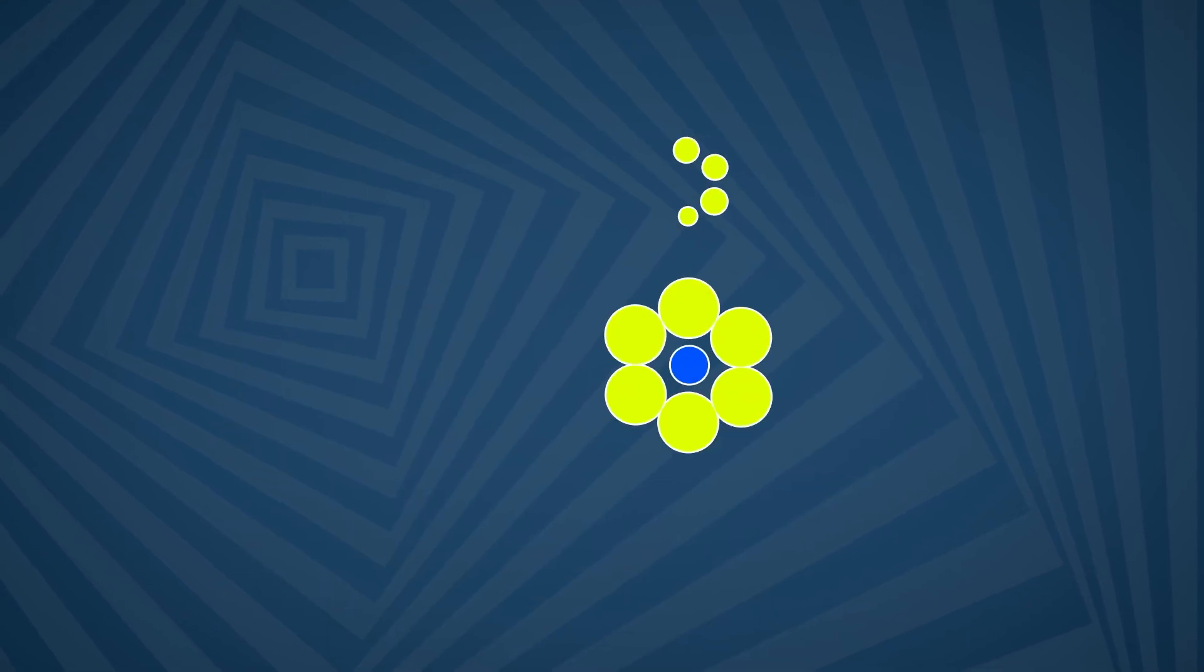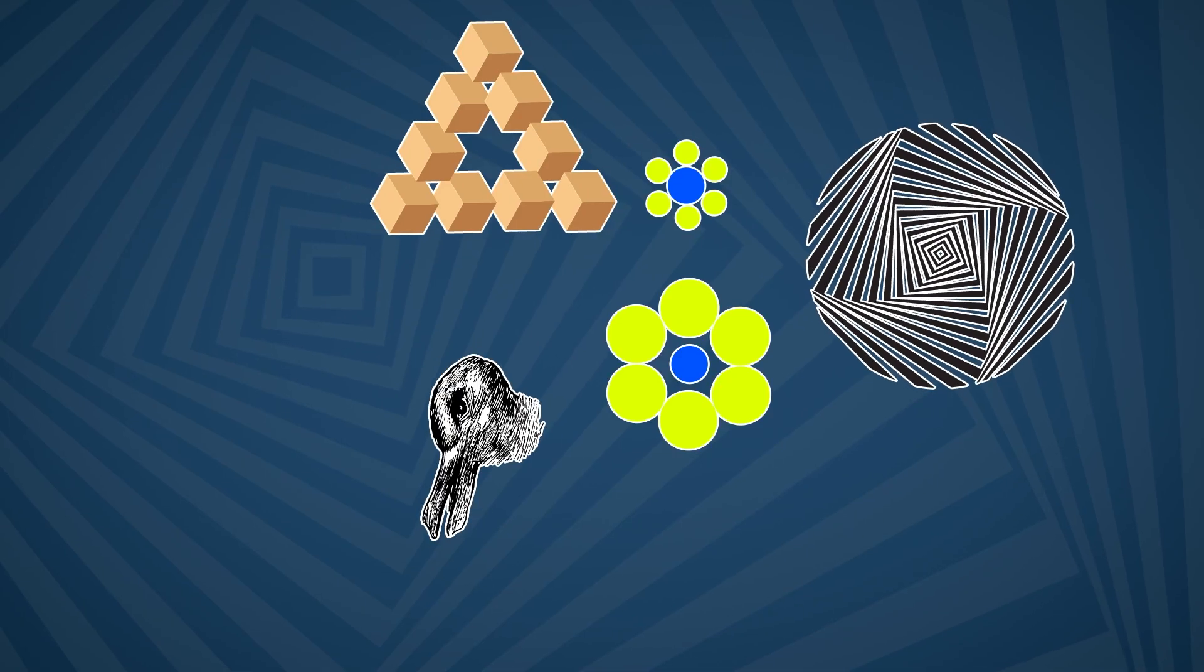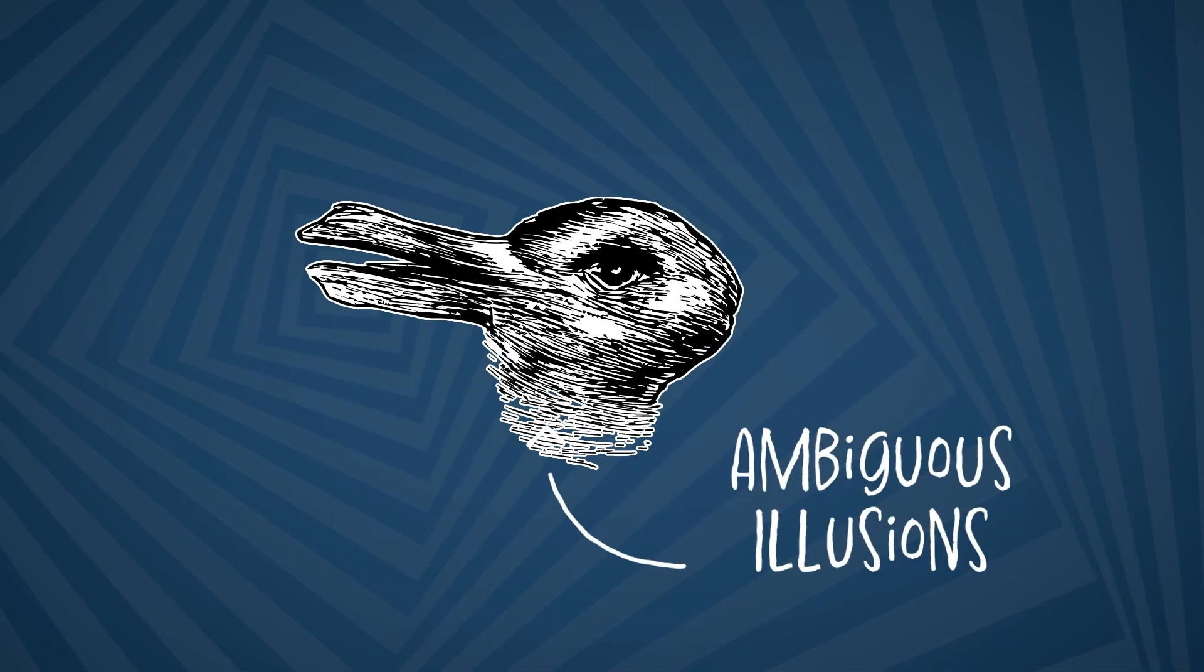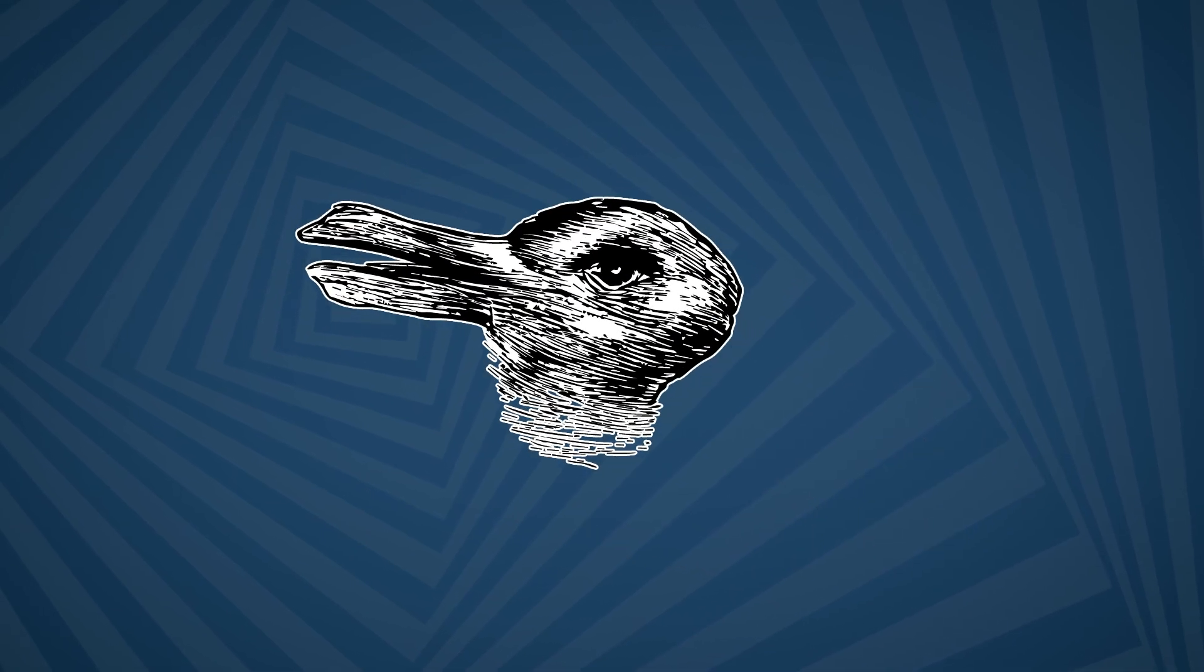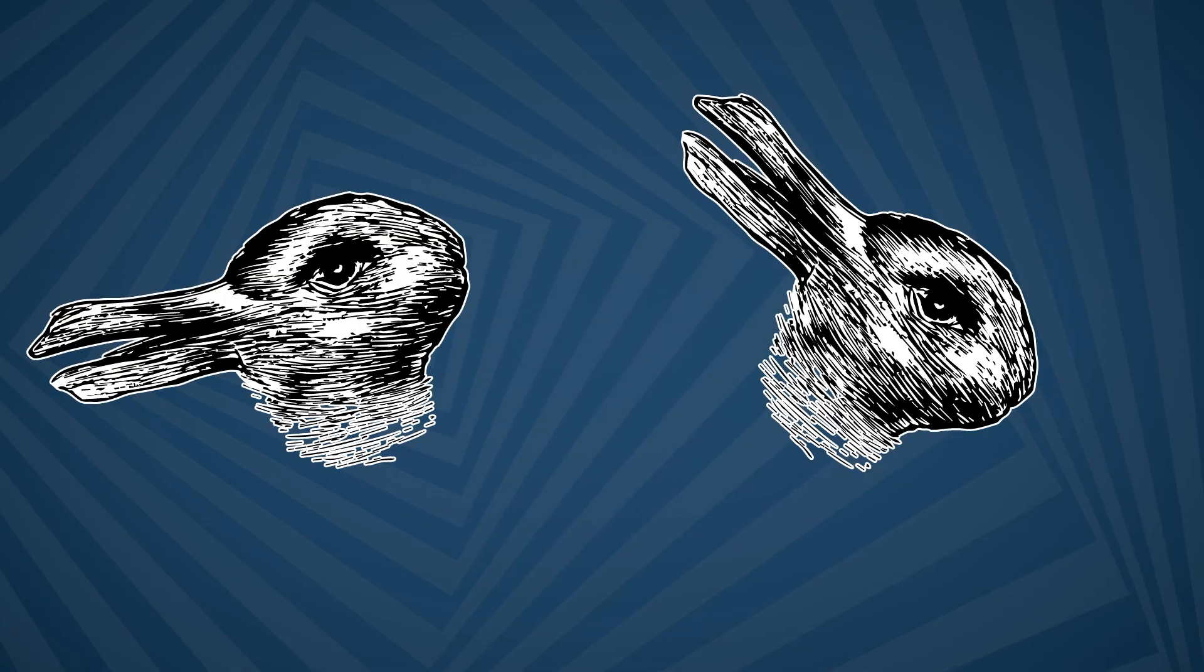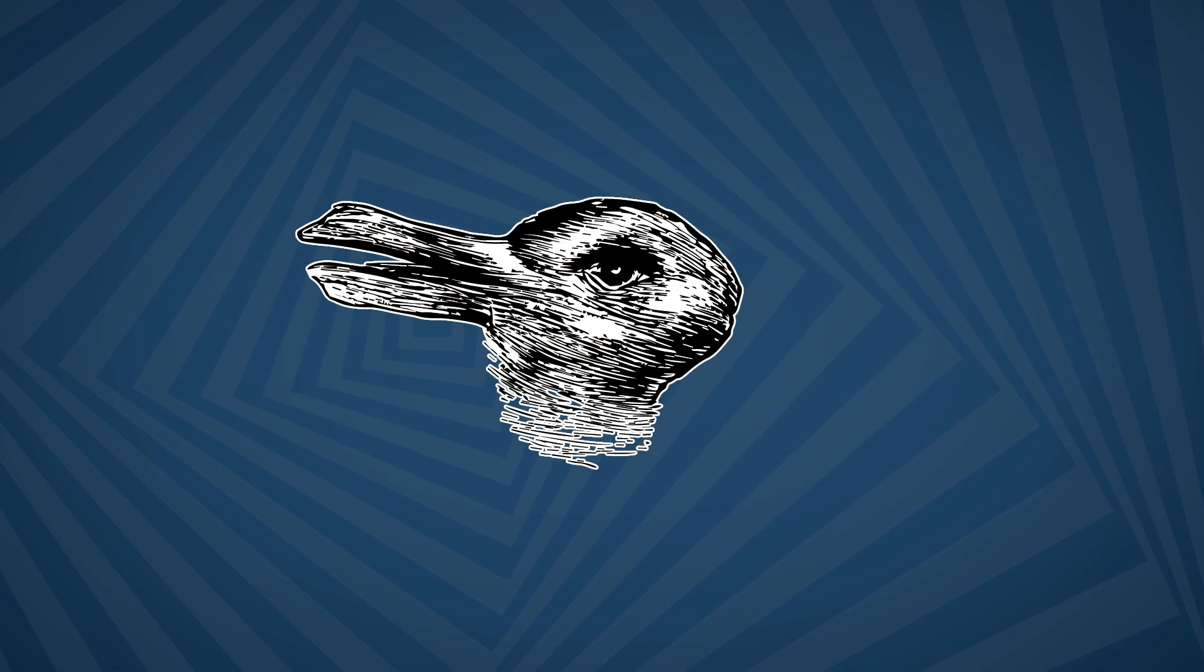Emma finds out that there are various types of illusions. Some examples include ambiguous illusions. These illusions trick us into seeing multiple things in one image. Ever seen the famous duck-rabbit illusion? Is it a duck, or is it a rabbit?